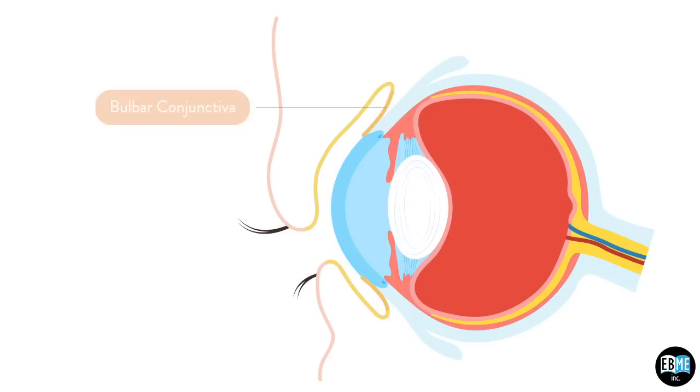It has two parts: the bulbar conjunctiva, which covers the sclera or the white wall of the eye, and the palpebral conjunctiva, which lines the inner aspects of the upper and lower eyelids.